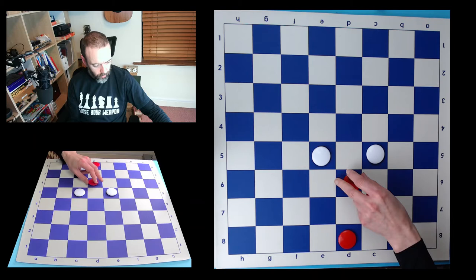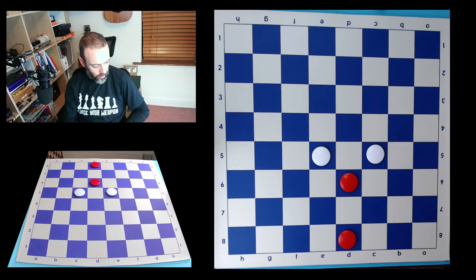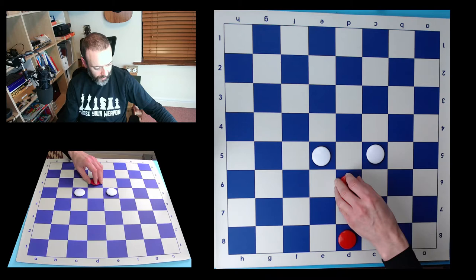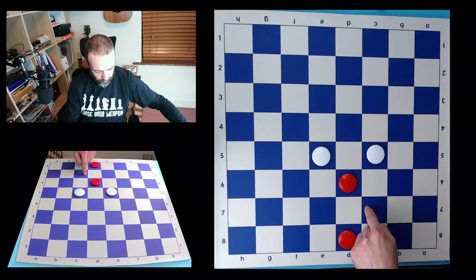So for example, here, red gives away one piece. Now, these shots only work because of the mandatory, which means you have to, you must do it, the mandatory capture rule. When a capture becomes available, you have to capture.